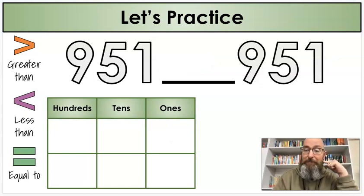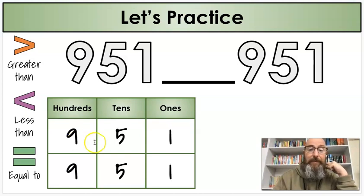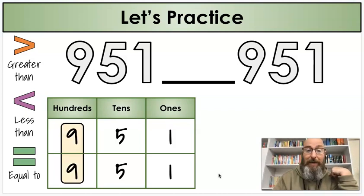Two more numbers again. Again, I write the numbers down first. 951, 951. I bet you already know the answer. But we're going to go through the process anyway. First step is, I compare my hundreds.